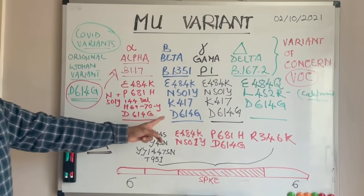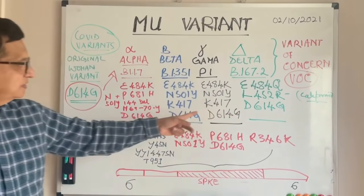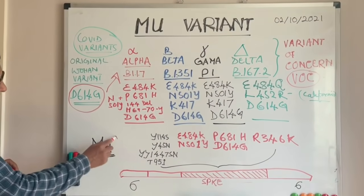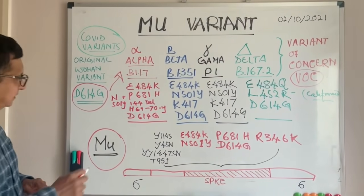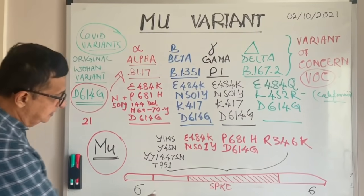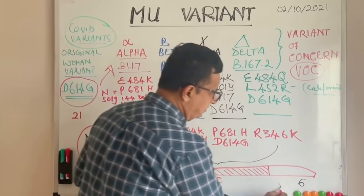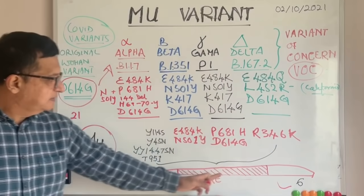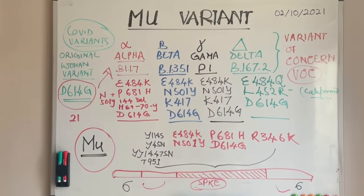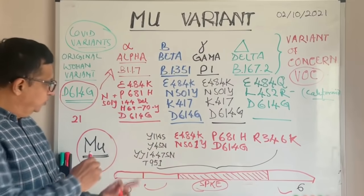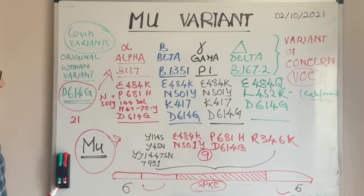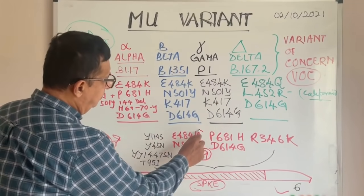D614G is a mutation that all these variants carry. Now let's look at the mu variant. As mentioned, it has 21 mutations in total — six in one region, another six in a second region, and this third part responsible for the spike protein contains nine mutations in the spike protein of the mu variant.